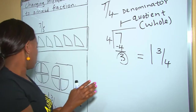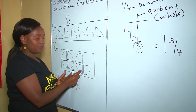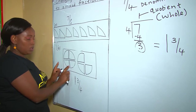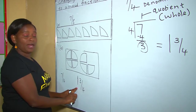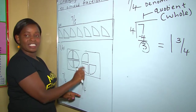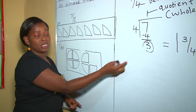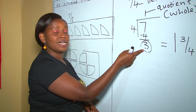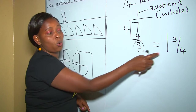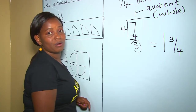Therefore, as you can see here, we have a whole, which is 1, and these 3 parts, which are 3 quarters. The remaining part here is 3 quarters because they are quarters. So, 1 and 3 over 4.